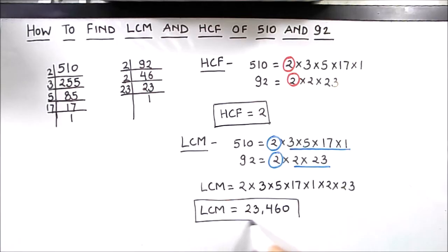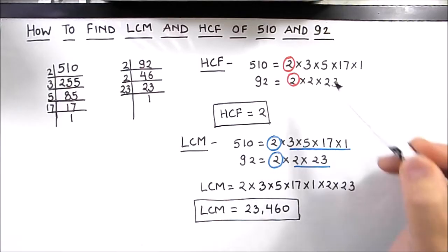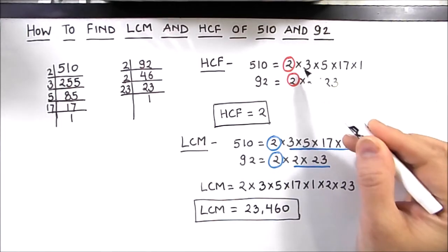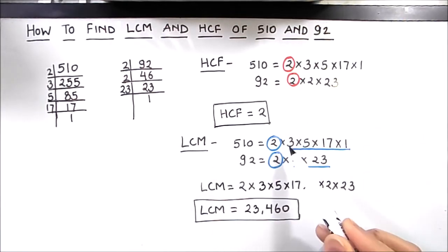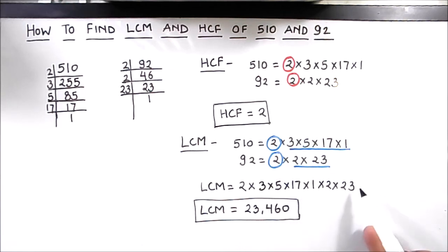So this is how you can find the LCM and HCF of two numbers using the prime factorization method. Just keep in mind that for HCF, we take only the common factor, and for LCM, we take the common factor only once and then multiply by the rest of the factors. I hope this video is helpful. If you like the video, please hit the like button and subscribe to my channel for more math videos. Thanks for watching.